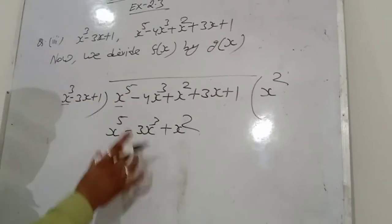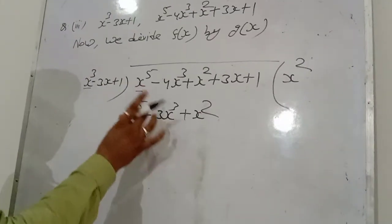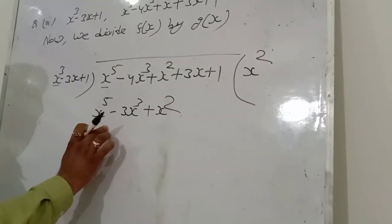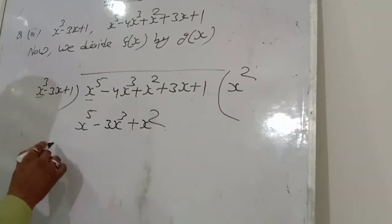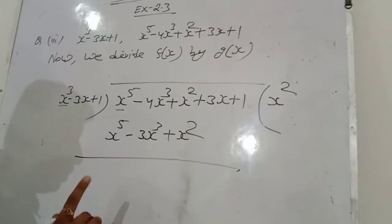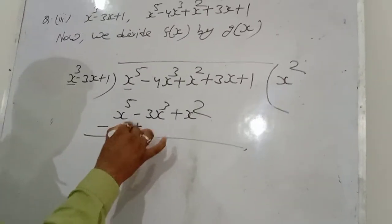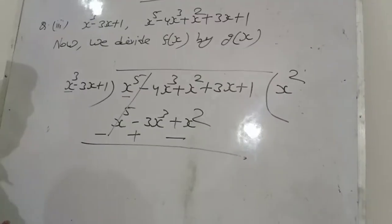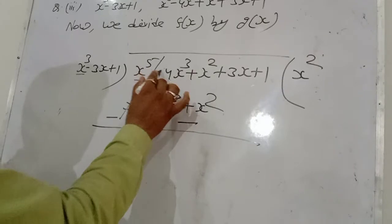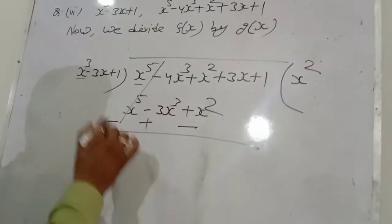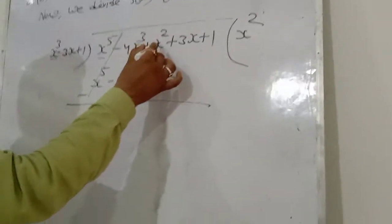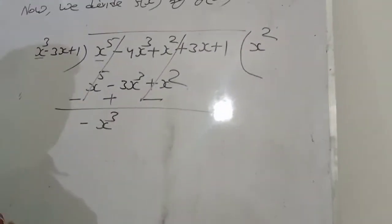Like term को like term के साथ ही रखना है — एक जैसे जो terms हैं उनको same term के साथ ही रखना है. x⁵ के नीचे x⁵, x³ के नीचे x³, x² के नीचे x². जब subtraction आप करें, तो नीचे वाले जो terms हैं सभी के sign change हो जाते हैं — minus, plus, minus. x⁵ cancel, -4x³ + 3x³ gives -x³, and the x² terms cancel also.